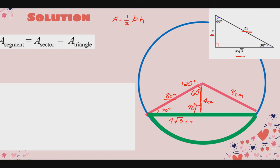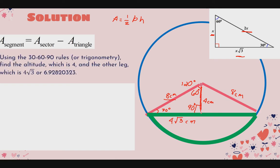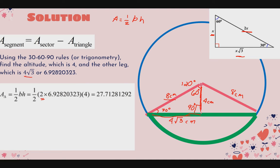Now we can find the area of the triangle. Using the formula: Area = one-half × base × height. The full base is 2 × 4√3 = 2 × 6.92820323. The height is 4 cm. So: Area = (1/2) × (2 × 6.92820323) × 4 = 27.71281292. This is an exact measurement since we did not multiply by pi in the triangle calculation.